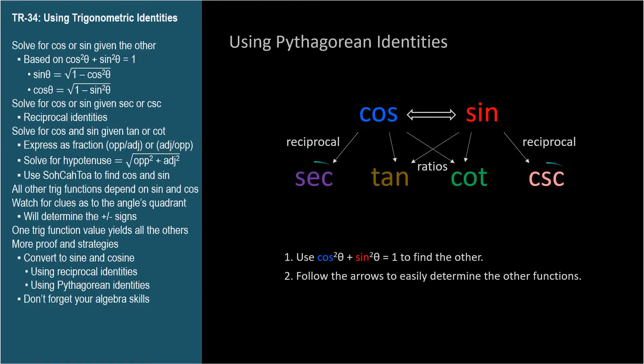If given secant or cosecant, take its reciprocal to get the cosine or sine. Then you're back in familiar territory to use the techniques just discussed to find the others by following the arrows.